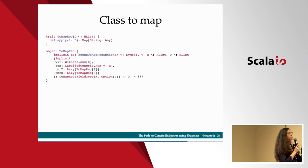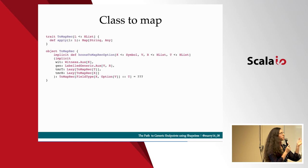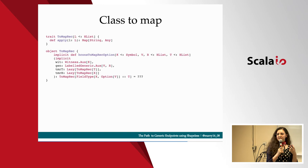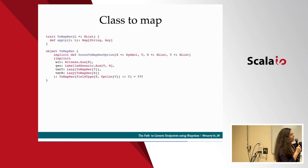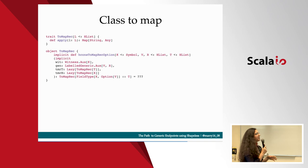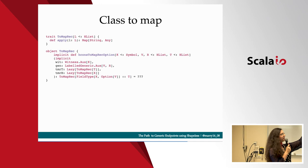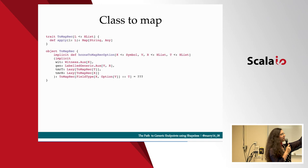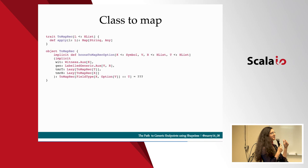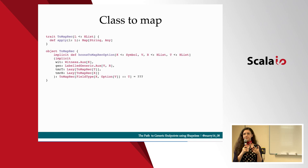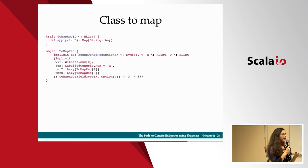By using the type class pattern, we defined our ToMapRec type class, which has an apply method that takes an HList as a parameter and returns a map from string to any. I'm going to show you the implementation for when the head of the HList is an Option. What's happening is: we first assume we have an implicit that knows how to fetch the name of the field — that's the Witness implicit from Shapeless. We then have an implicit that knows how to convert from the type inside the option to an HList — that's LabelGeneric. And then we have two more implicits: one that knows how to recursively convert the tail of the HList, and one that knows how to recursively convert the head.